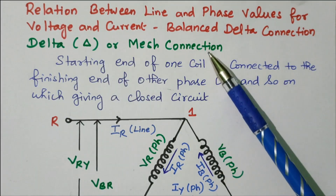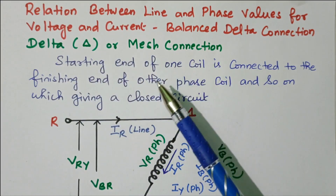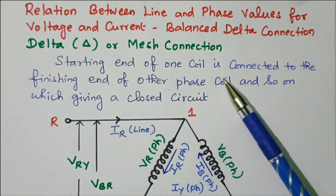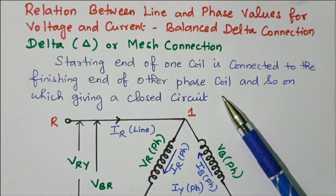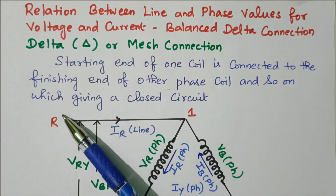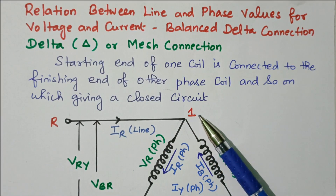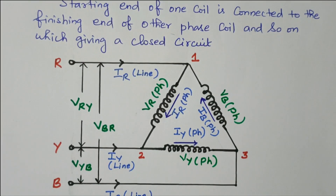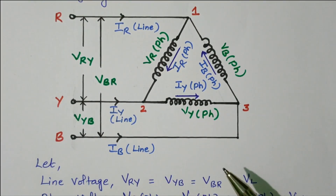Now we will go to the topic: balanced delta connection, also called delta or mesh connection. The connection is nothing but the starting end of one coil connected to the finishing end of another phase coil, and so on, which gives a closed circuit. That is called a delta connection or mesh connection. Now we will see the diagram.